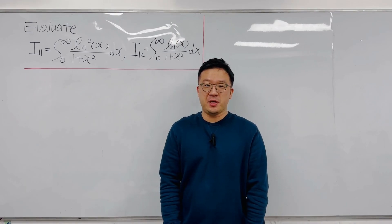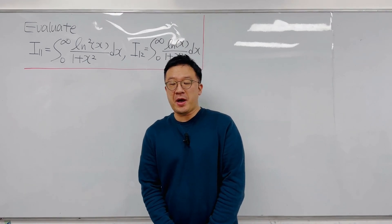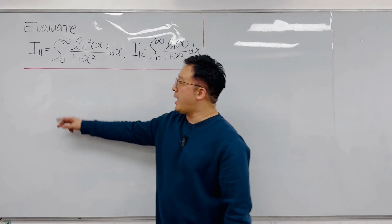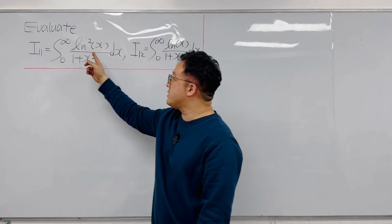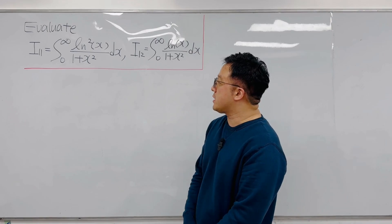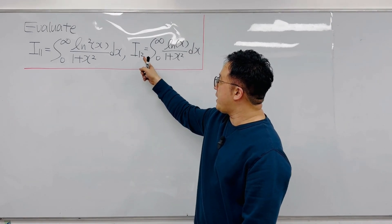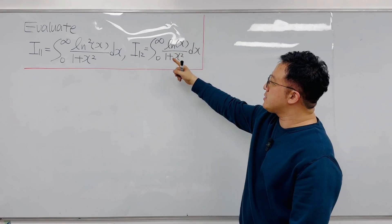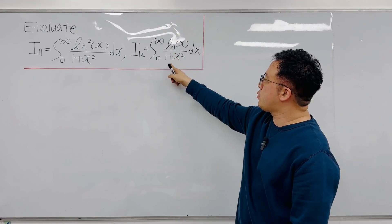Hello guys, welcome back. PK here. So in this video, we're going to be evaluating these two interesting integrals. The first one, I11, is the integral from 0 to infinity of ln²(x) over (1 + x²) dx. The second one, I12, is the integral from 0 to infinity of ln(x) over (1 + x²) dx.